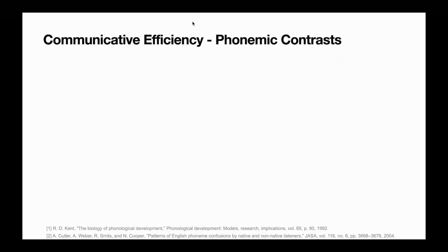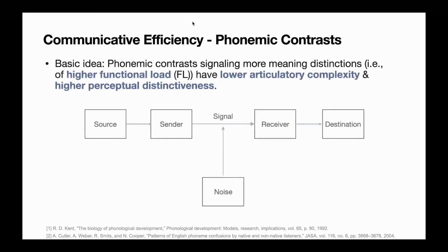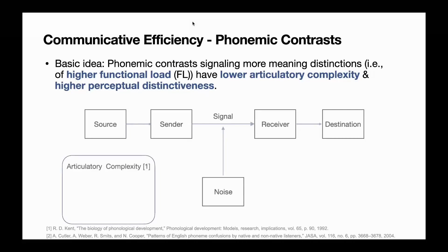we test the hypothesis that phonemic contrasts signaling more meaning distinctions have lower articulatory complexity and higher perceptual distinctiveness. In other words, if a phonemic pair is more important in a language, phonemes in this pair will be easier to articulate, thus minimizing effort on the part of the speaker. Meanwhile, this phonemic pair will be perceptually distinct, thus minimizing the likelihood of confusion on the part of the listener. But how to evaluate these three measures quantitatively?